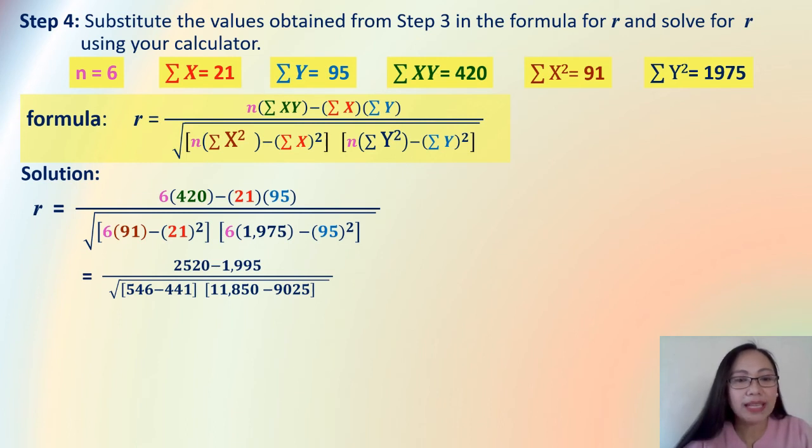So, now we multiply 6 times 420. That is 2,520. Minus 21 times 95. We have 1,995. And then, the denominator. For the denominator, 6 times 91. That's 546. 21 squared is 441. 6 times 1,975 is 11,850. And we have 95 squared. That is 9,025.